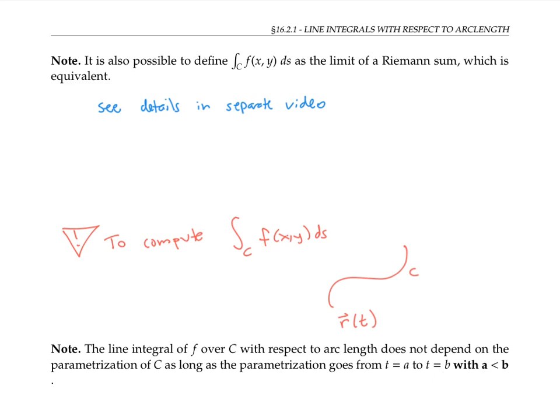If your parameterization is going from a bigger value of t to a smaller value of t, then when you compute your line integral, you're actually going from a bigger to a smaller number. It's kind of like you're integrating backwards, and you end up getting the negative of the answer you would if your parameterization went from a smaller number to a bigger number.